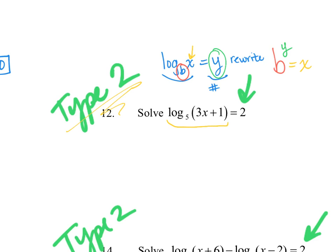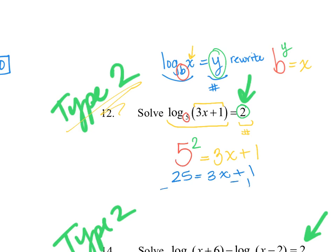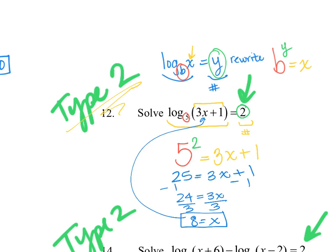For question 12, we already have a single log equal to a number, so we rewrite in exponential form: base 5, power 2, equals the argument 3x plus 1. So 5 squared is 25 equals 3x plus 1. Subtracting 1: 24 equals 3x, divide by 3, x equals 8. Checking: plugging 8 in gives 24 plus 1 equals 25, which is fine.